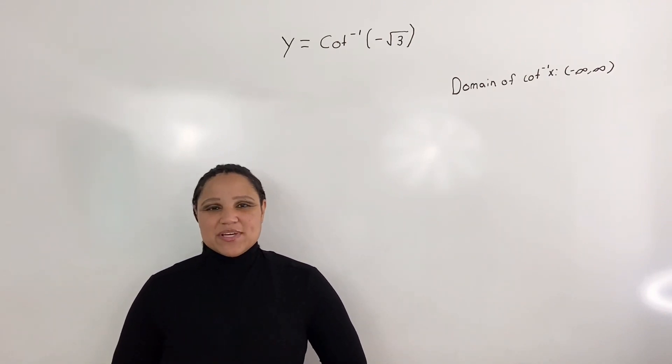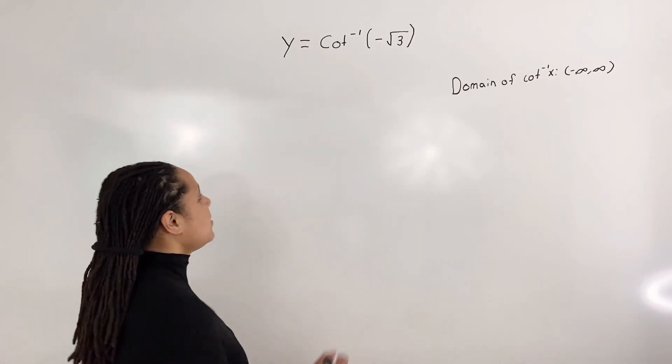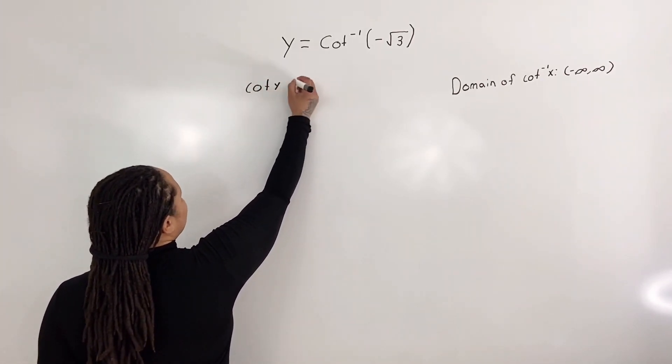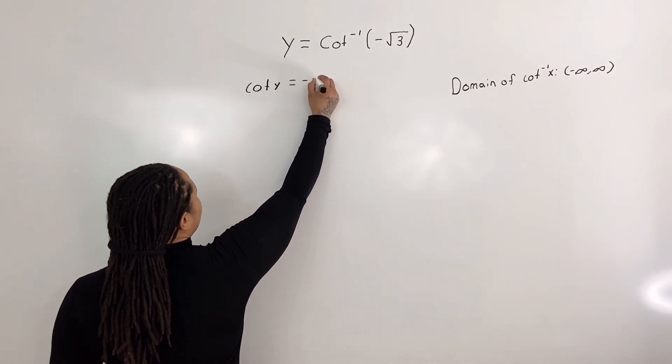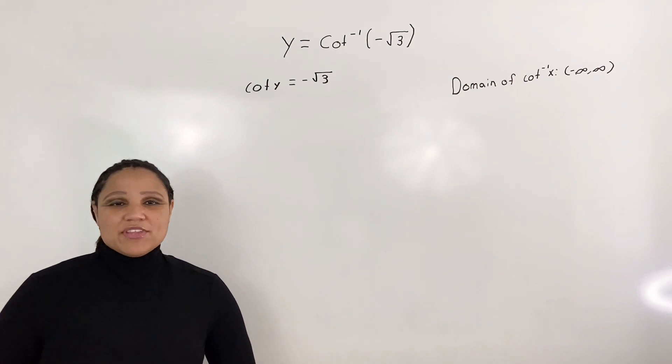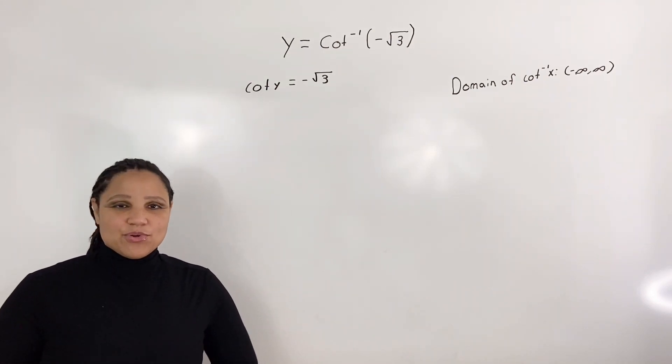So the next thing we want to do is take the cotangent of both sides. So cotangent of y equals negative root 3. Now we want to ask ourselves, where on the unit circle does cotangent of y equal negative root 3?